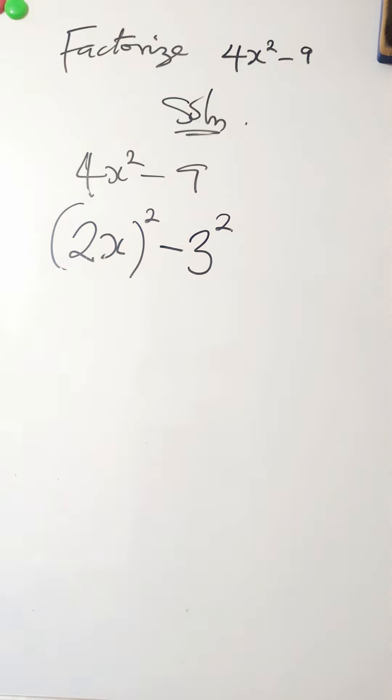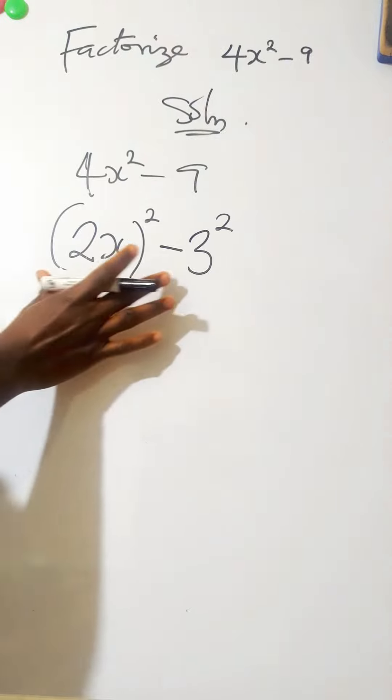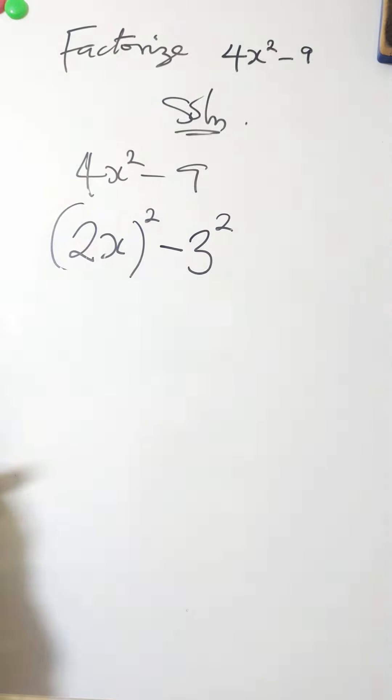Right. Yeah, you can see this is looking like difference of two squares. It's difference of two squares. So what it means is that if we have